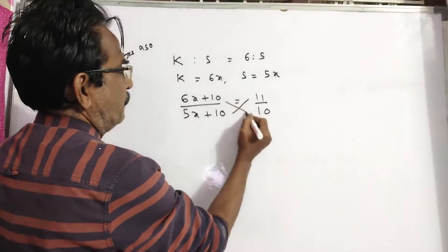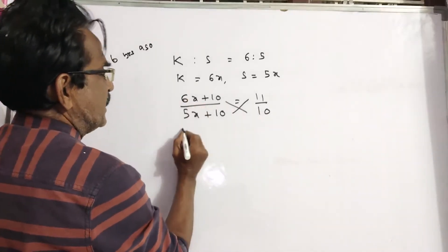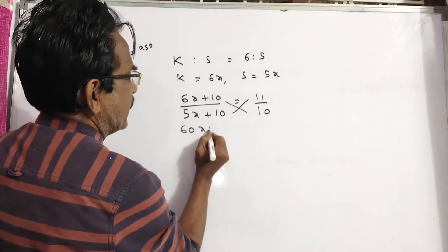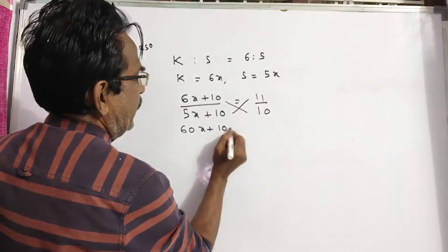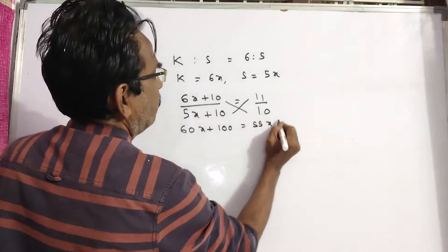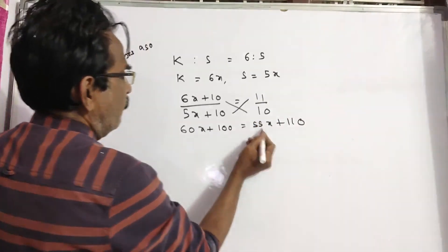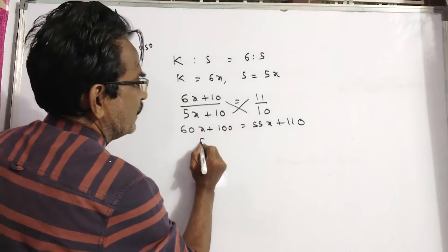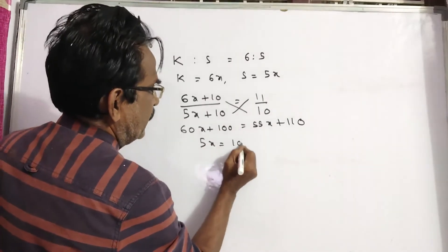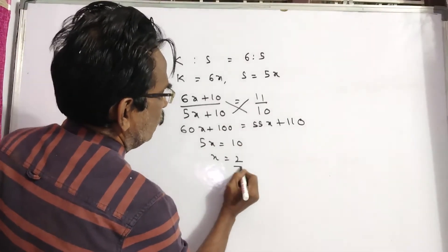Now cross multiply. So 60X plus 100 is equal to 55X plus 110. Five X is equal to ten. X is equal to two.